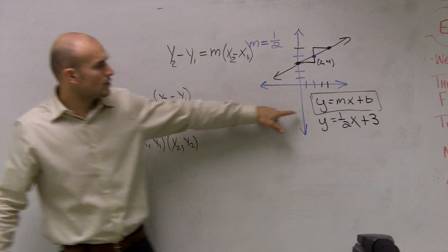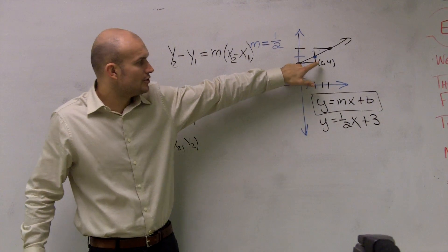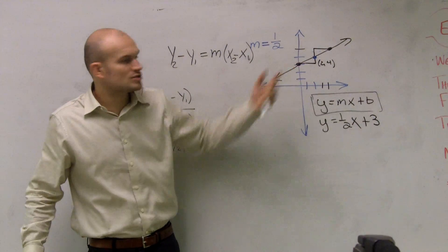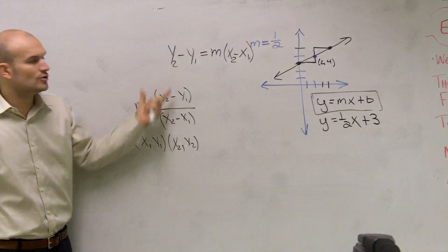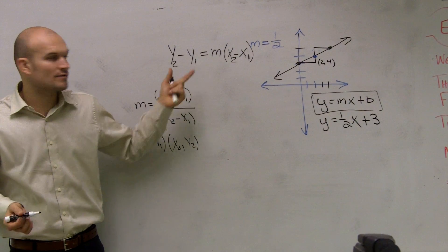Well, here, we're only given one point, right? You're only given one point. Your only point is (2, 4). So what do I do with my other y and x? You don't have to do anything to them, OK.